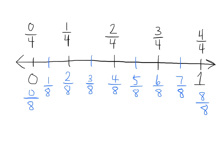I've pre-made a number line here, and I've labeled the top ones fourths — zero-fourths, one-fourth, two, three, four-fourths — so we go from zero all the way to one. These big jumps, these black interval lines, are quarters or fourths.